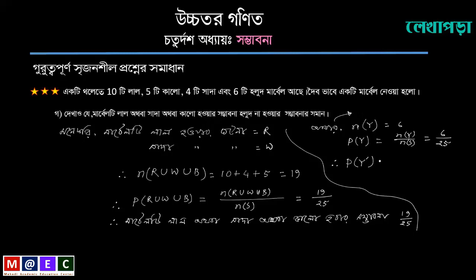Probability of Y: 1 minus probability of Y. The probability of Y is 6 by 25.